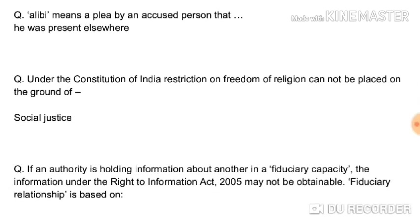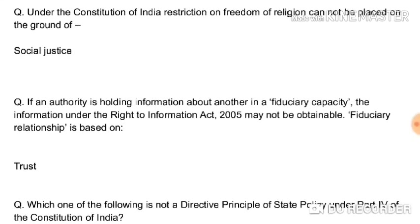Alibi means a plea by an accused person that he was present elsewhere. For example, if there is a murder case against A and the commission of the murder was in Kolkata, but at the time of the offense Mr. A was in Delhi, he can prove this by presenting a railway ticket, postal receipt, or any other evidence. This plea or evidence he provides regarding his innocence — that he was present elsewhere — is called alibi.